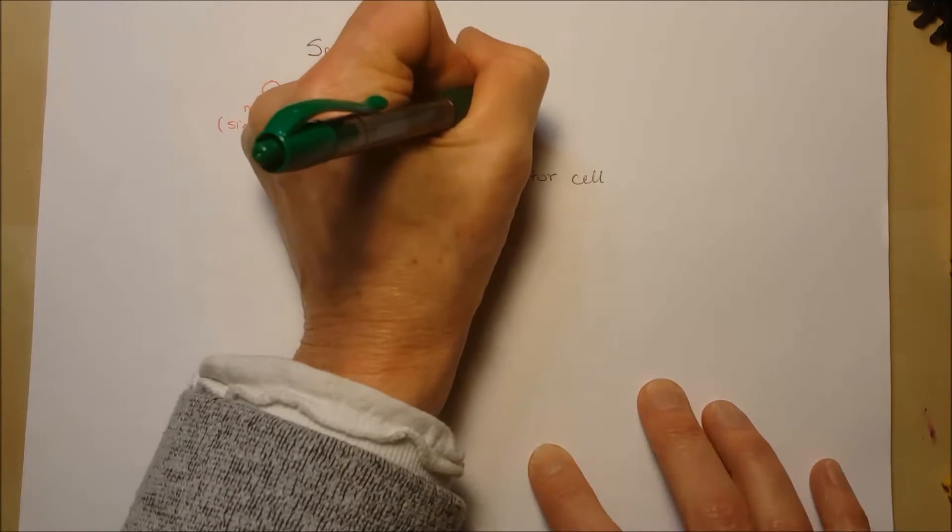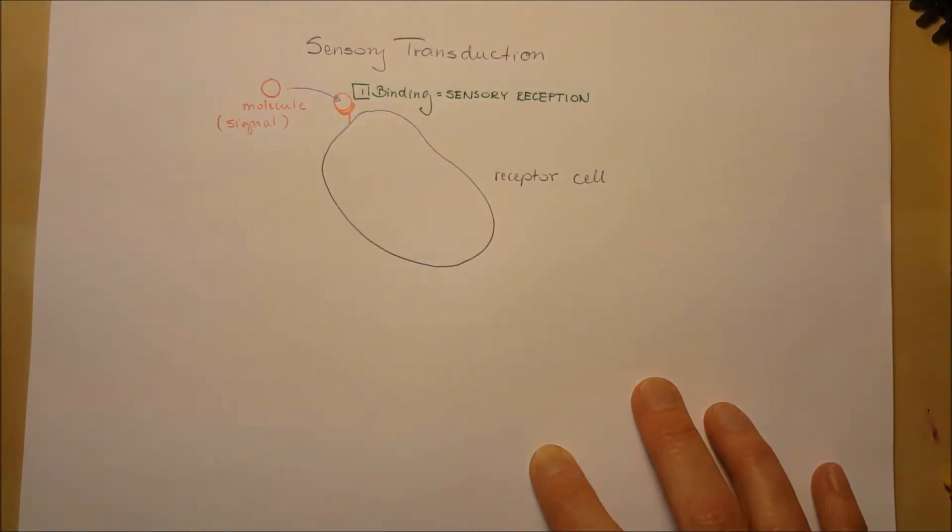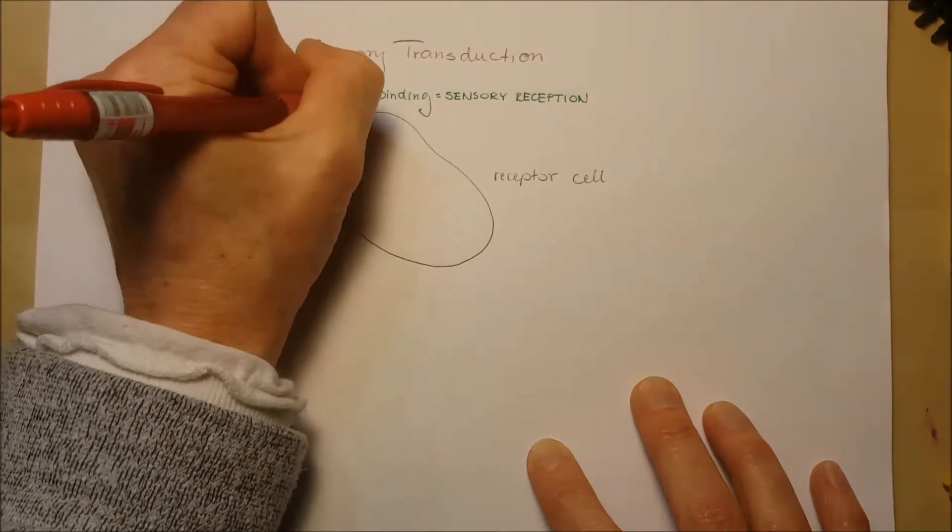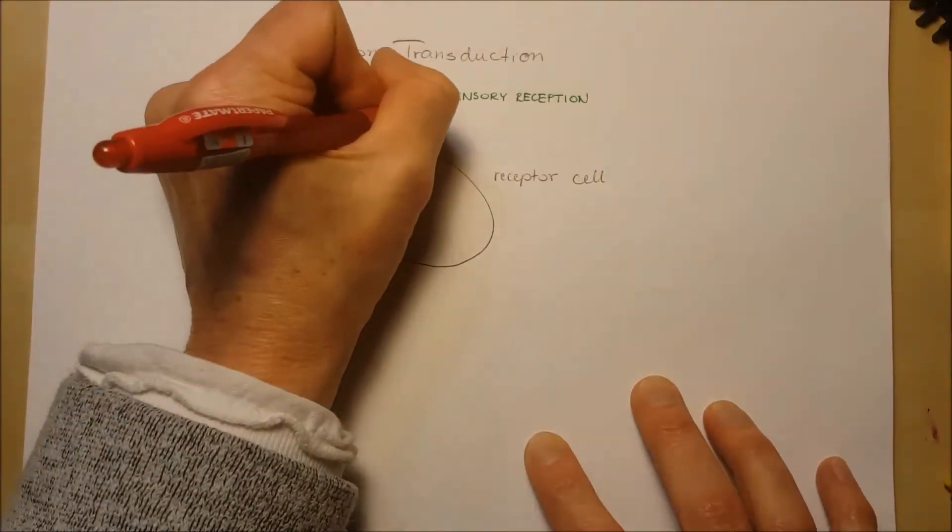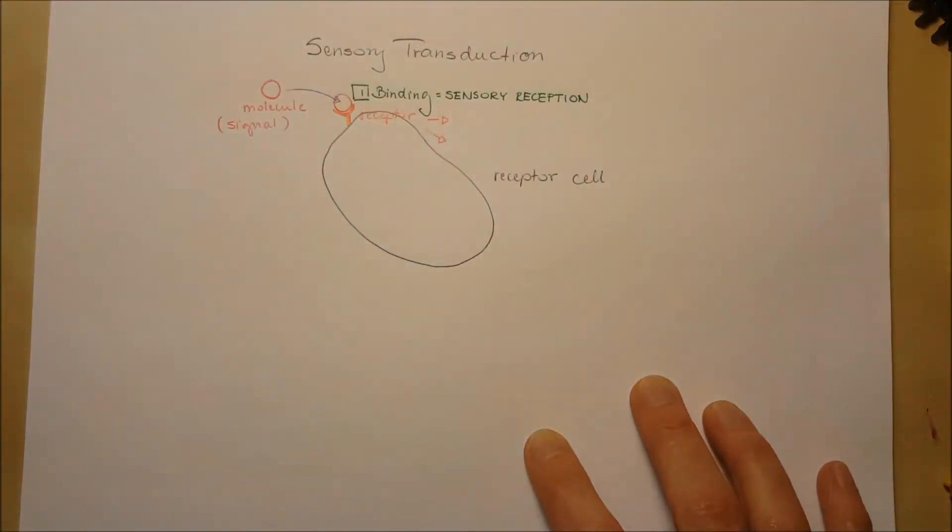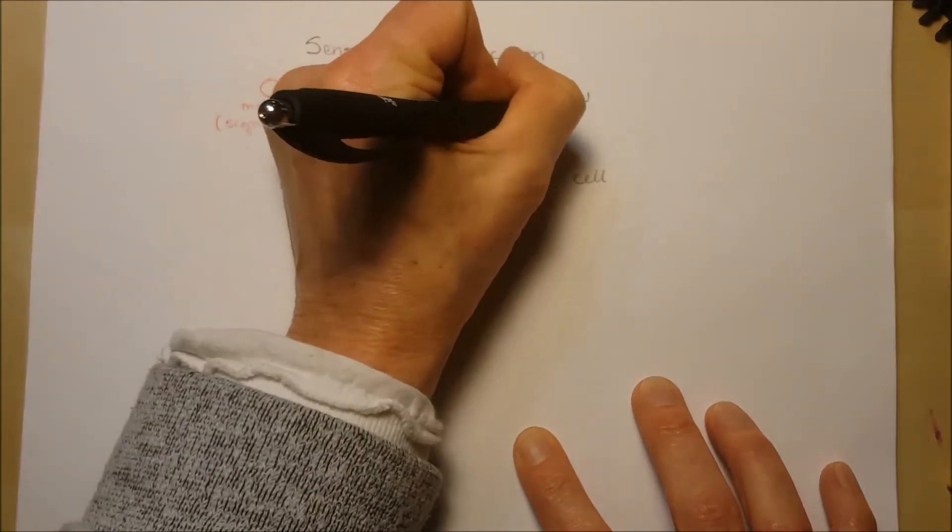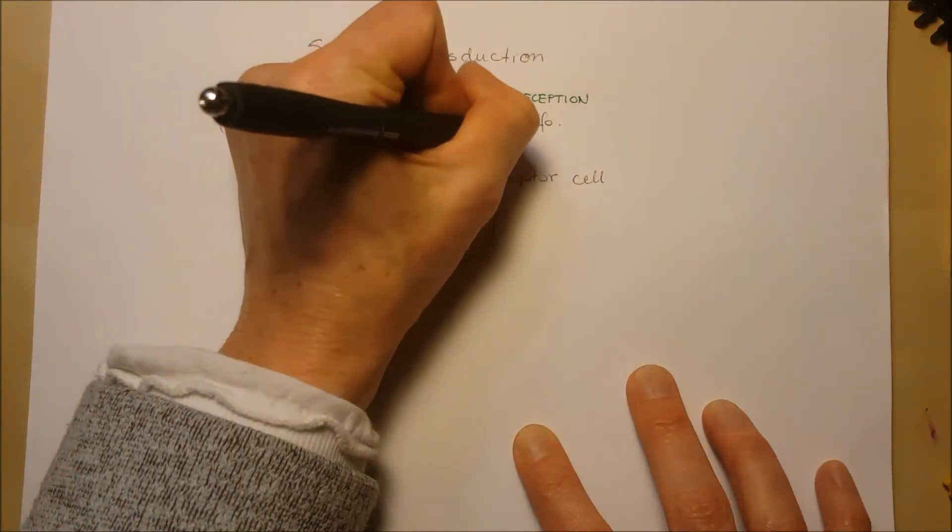And the receptor cell's main function is getting information from outside of the cell, around the neighborhood or the environment, and generating electric signal. That is really the receptor's main function.